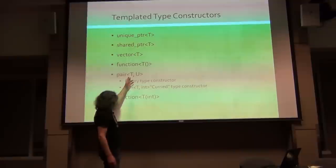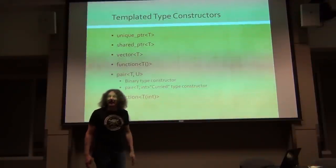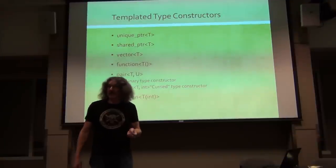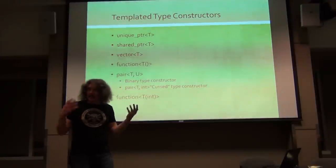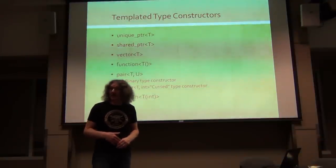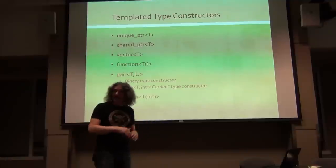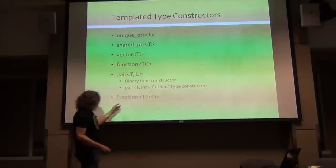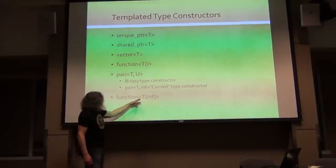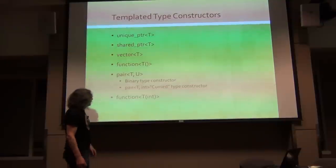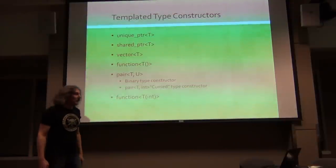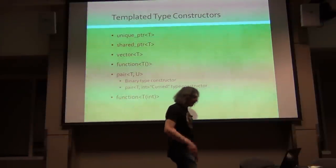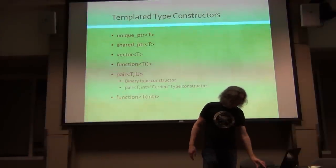Now, when you have a binary type constructor, you can just fill one of the type arguments with a concrete type, and you'll get a unary type constructor. This is sort of similar to currying. And of course, function of T, that's another currying type constructor.